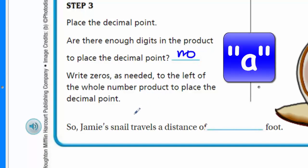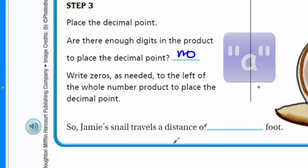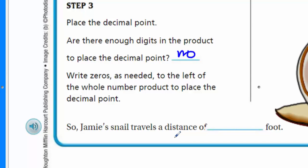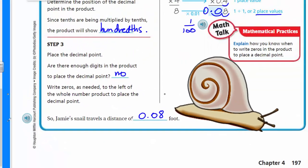So Jamie's snail travels a distance of 0.08 foot. And again, her snail was much faster. Okay, we're good to go.